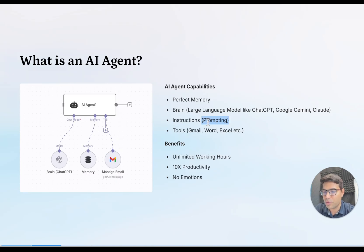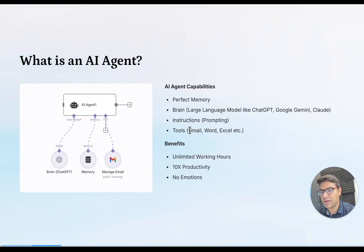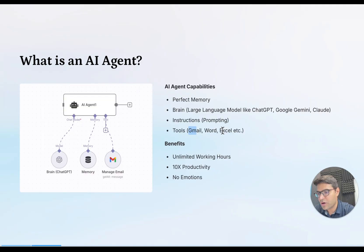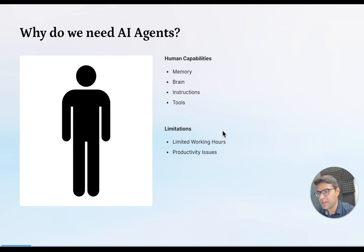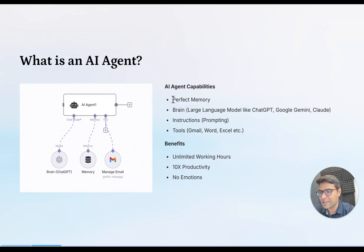That's where prompting is important. Finally, we also provide tools to an AI agent because to perform a particular task, an AI agent needs tools like Gmail, Word, Excel, Slack, or many other tools. If you compare this with a human, a human has four main items, and we have provided exactly those same four items to an AI agent to make it equivalent to or better than a human.